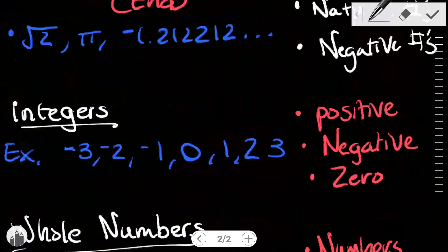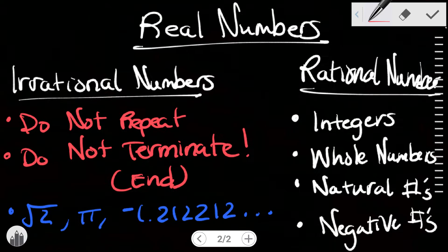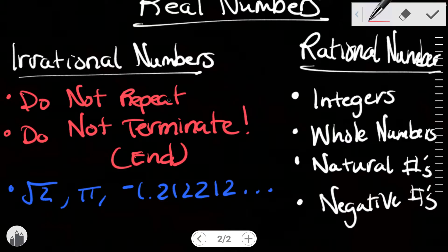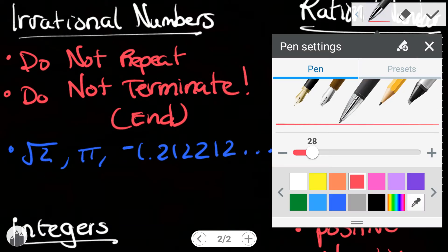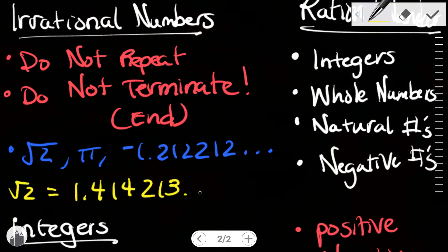Doing a recap: real numbers break down into irrational numbers and rational numbers. To be an irrational number, you do not repeat and you do not terminate. For example, the square root of 2 is approximately 1.414213 and it just goes on and on. Pi also continues going on and on and doesn't repeat.